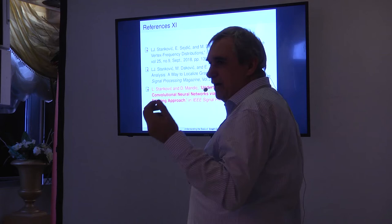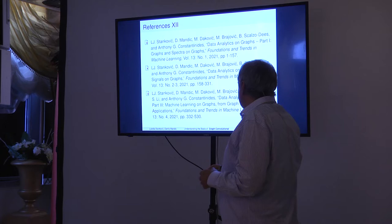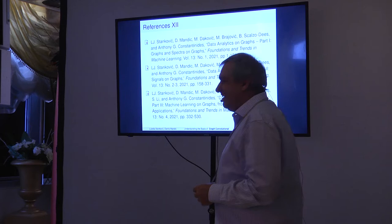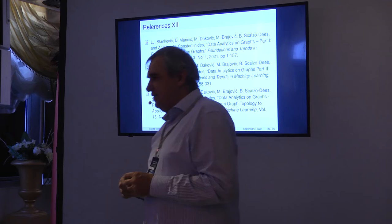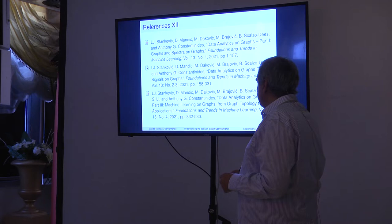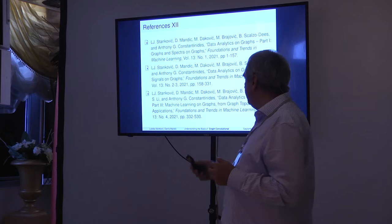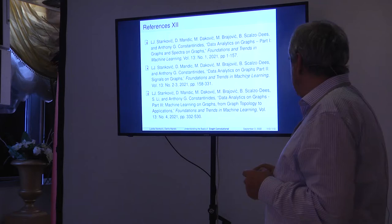A book, 'Data Analytics on Graphs,' written with Danilo and a few other authors, is a collection of three papers totaling 530 pages published in 2021. The first part covers graphs, spectra on graphs, properties of graphs, cuts, and spectral cuts. The second part, signals on graphs, introduces signals on graphs and how to process them. The third part covers how to learn the graph from data and how to apply graphs in machine learning. A paper on match filtering in graph convolutional neural networks will appear in IEEE Signal Processing Magazine.